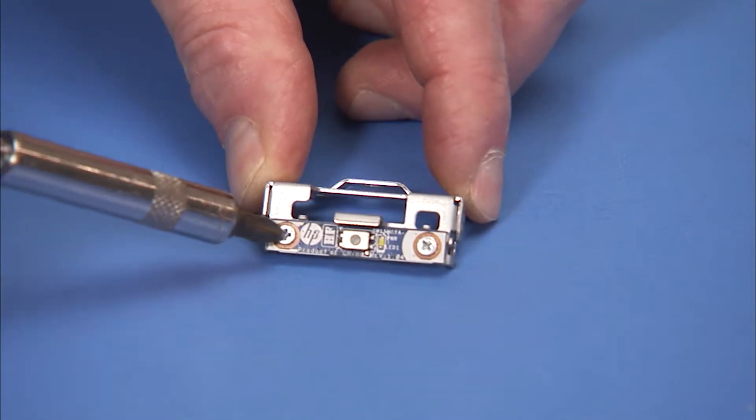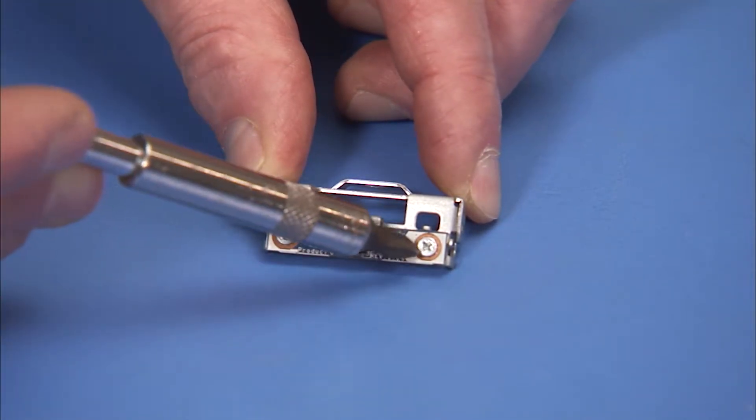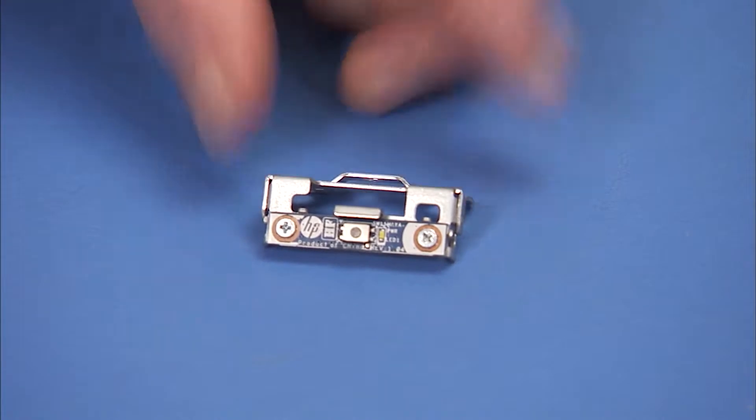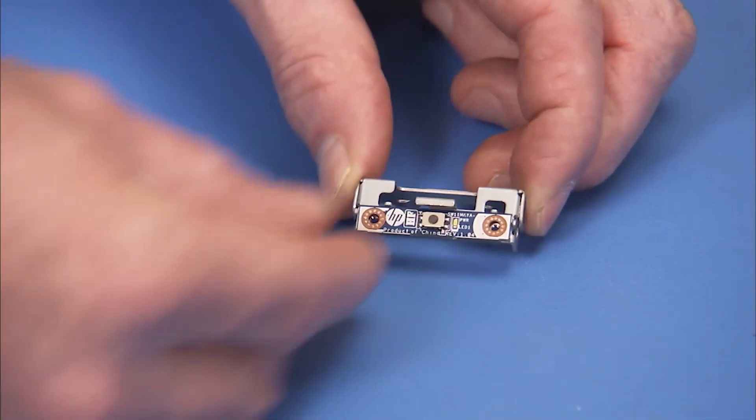Detach the two Phillips number one screws that secure the power button board to its bracket. Pull the board off of the bracket.